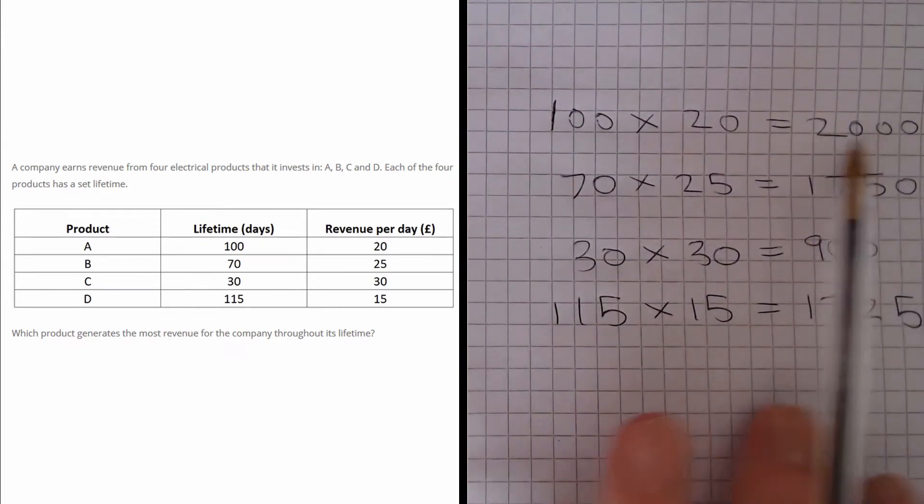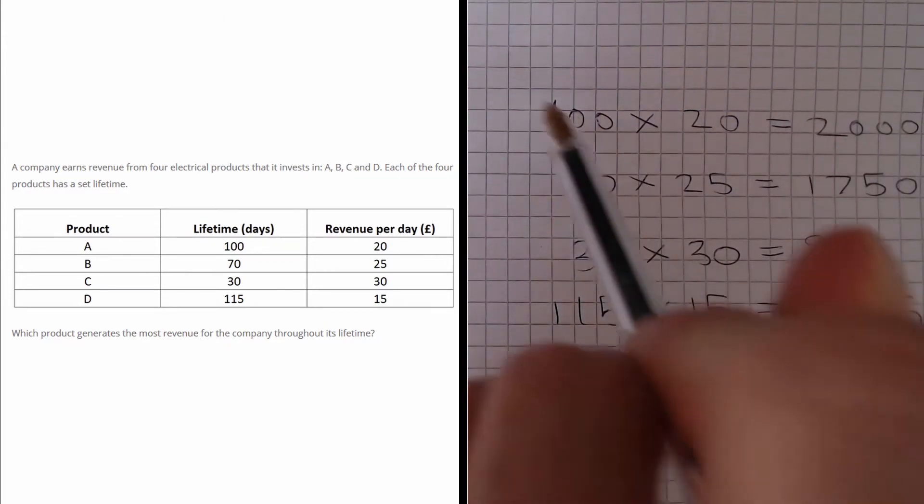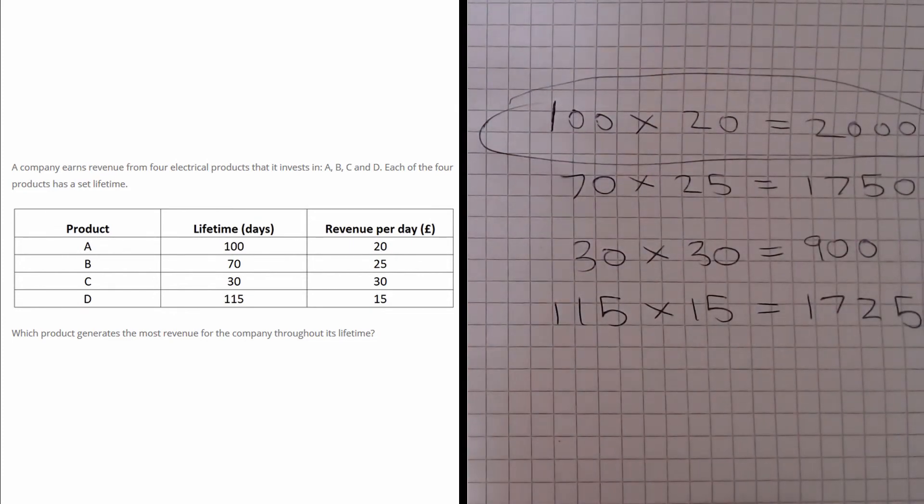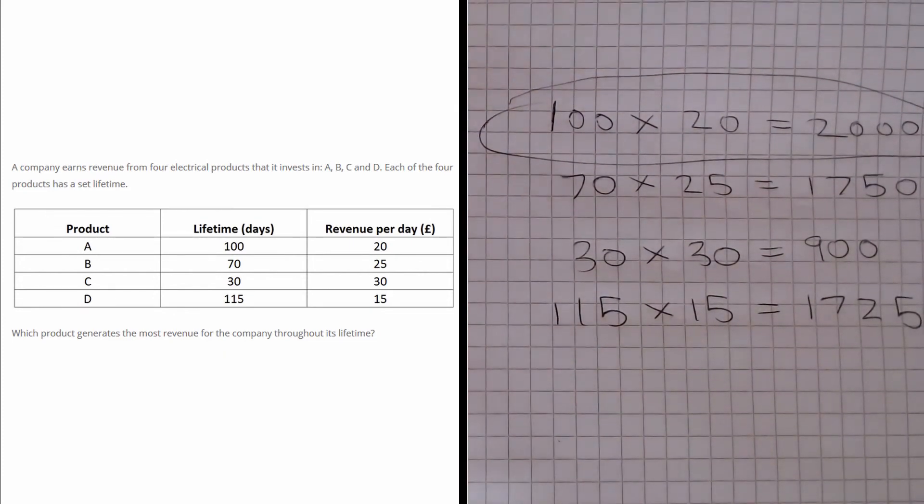From here, we can see that the largest number out of the four is the 2000, which relates to product A. So the answer for this question is A.